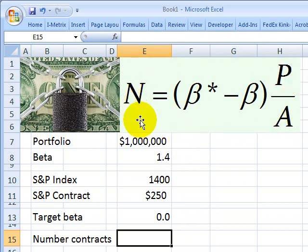I'll use the notation from John Hall's book on derivatives. The formula says the number of contracts we use to hedge the portfolio equals the change in beta we're trying to implement—that is, the target beta minus the current beta of our portfolio—multiplied by this fraction.